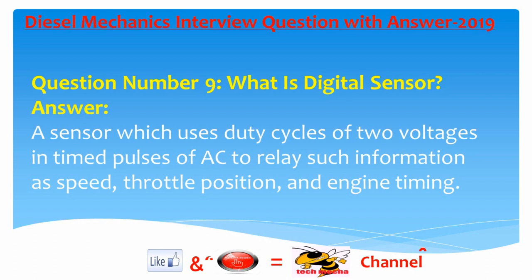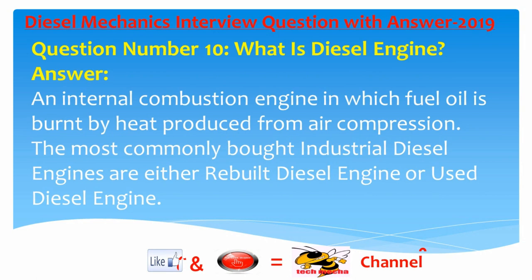Question number nine: What is a digital sensor? Answer: A sensor which uses duty cycles of two voltages and timed pulses of AC to relay information such as speed, throttle position, and engine timing.